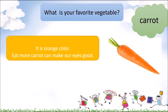This vegetable can make your eyes good — it can provide your health. It is orange color. It is carrot. Carrot can make our eyes good. Please everyone repeat after me: carrot. My favorite is carrot. It is orange color. Carrot can make our eyes good.